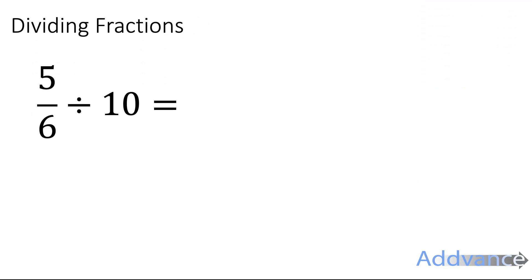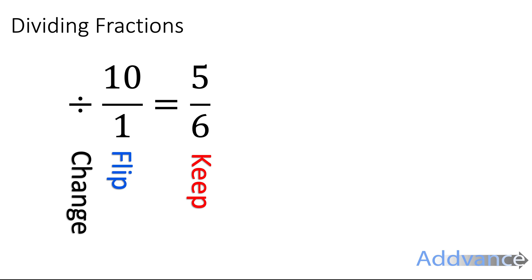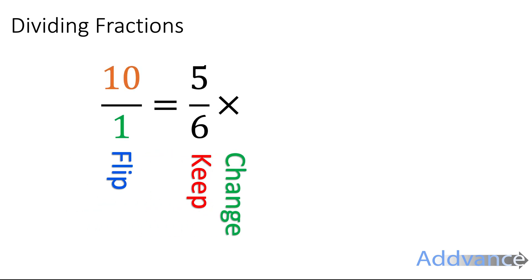And see this example, 5 sixths divided by 10. Now for this one we just have to remember that 10 is the same as 10 over 1. So we always write the number as a fraction. 5 sixths divided by 10 over 1, we're going to keep, change, flip. Keep the first fraction, change the divide to times and then flip the last fraction upside down.